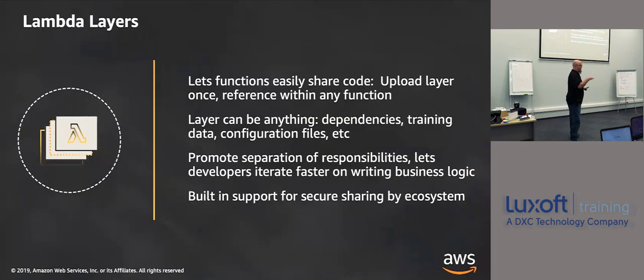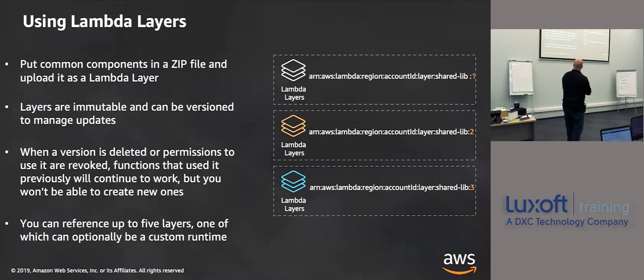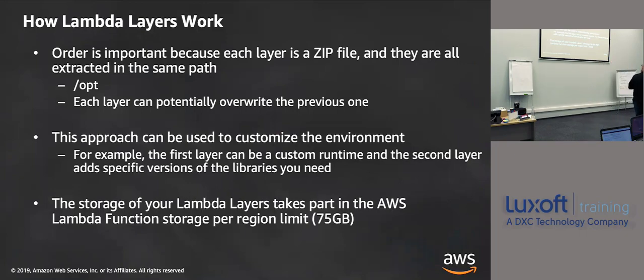We talked about layers — they're easy to share and immutable. How Lambda layers work: order is important. How I introduce the layers is how they're looked at. If my first layer has one version of a package and my second layer has another version, the second one is taken — it gets overwritten. Each layer is in a zip file and they're all extracted in the same path, which is /opt. Each layer can potentially override the previous ones. This approach can be used to customize the environment — for example, the first layer can be a custom runtime like PHP, and then you can add PHP packages in the second layer.